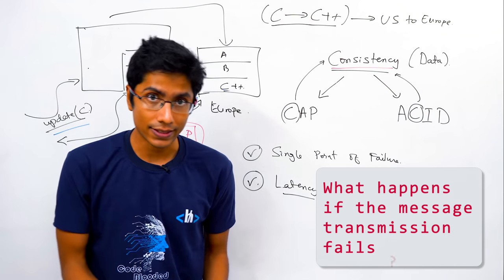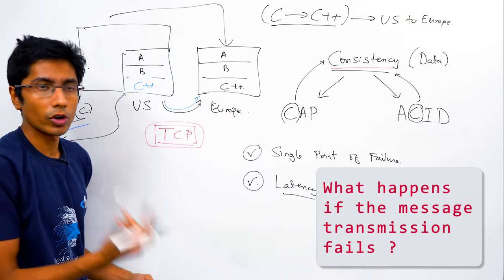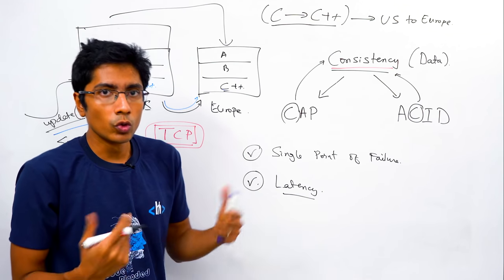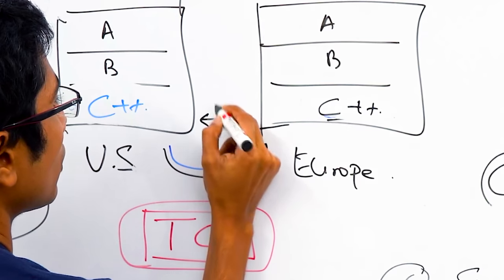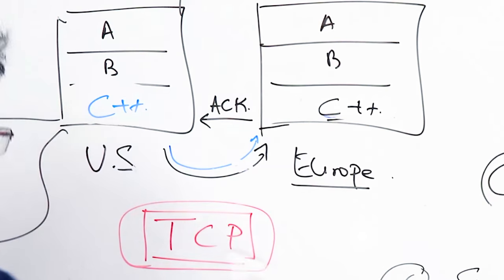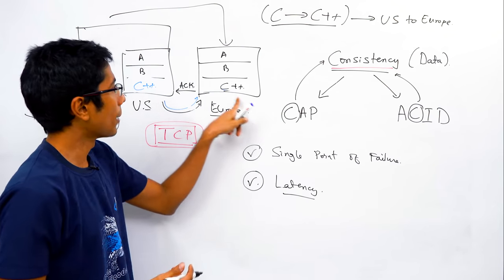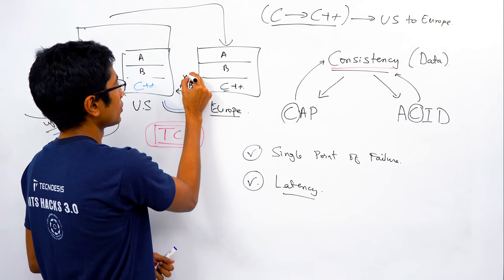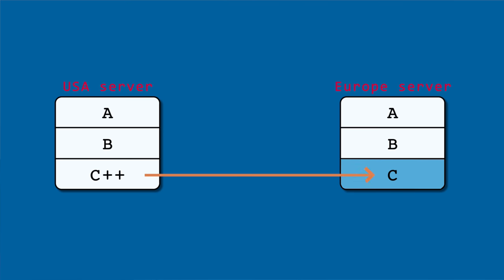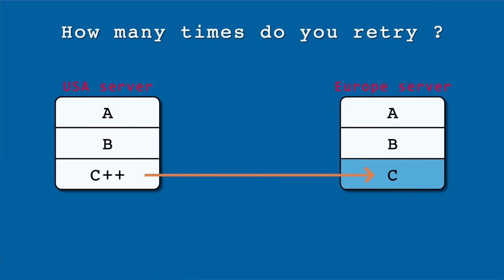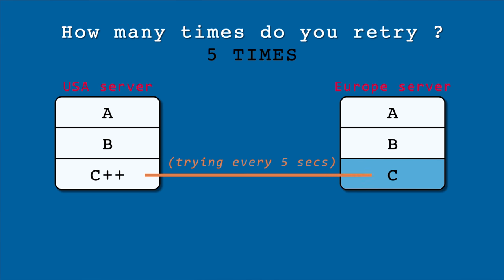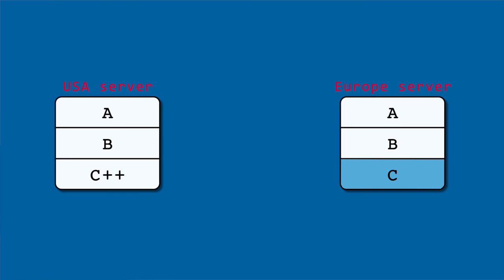However, what happens if the message transmission fails — if there's a network issue or the Europe server is down? You'll never know unless you get an acknowledgement. If you get an acknowledgement, the update went through. If you don't, you can retry — retry infinitely every five seconds, or try five times and then give up, marking the record as potentially wrong or allowing these two data points to be inconsistent.